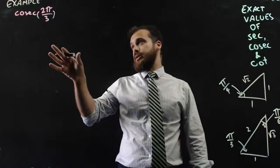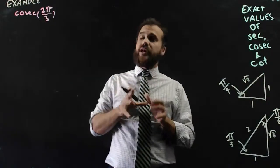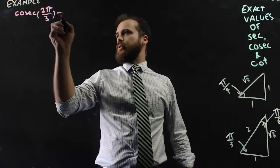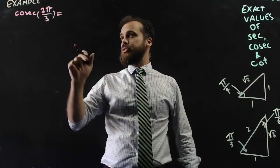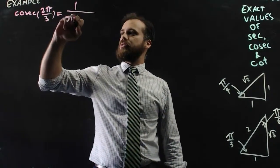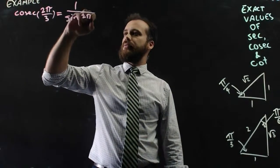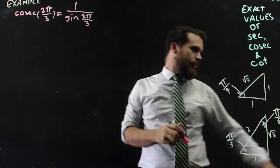So a quick example here. Cosec 2π/3. I'm trying to find the exact value of that. I should know that cosec θ is the same as 1 over sine θ, which in this case is 1 over sine 2π/3.